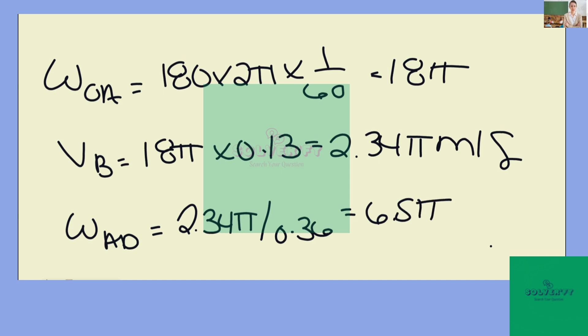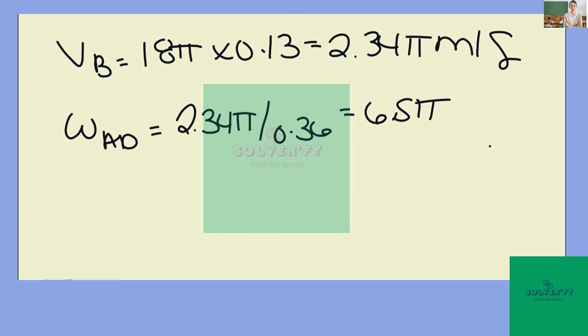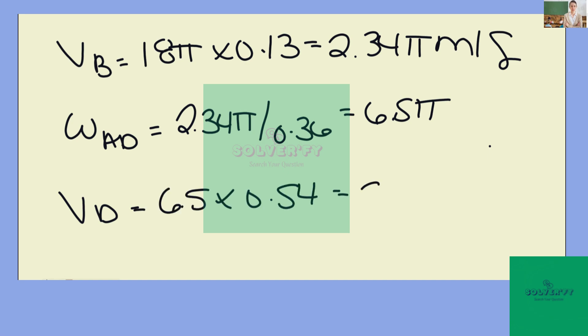Then to calculate the velocity at D, we're going to take 6.5 pi times 0.54, which is going to give us 3.51 pi meters per second.